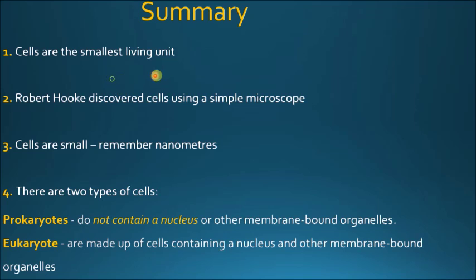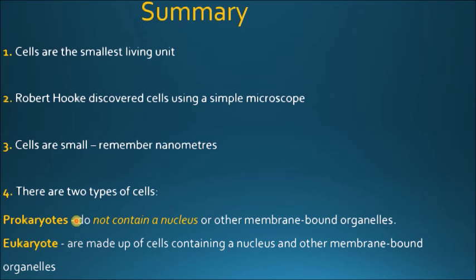Summary for today: cells are the smallest living units. Robert Hooke discovered cells using a simple microscope. Cells are small — remember, we're talking micrometer scales, not nanometers. There are also two types of cells: prokaryotes, the ones that do not contain a nucleus, and eukaryote cells, the ones that contain a nucleus and membrane-bound organelles. I'll be making a video soon with a better description of those types of cells, but I hope this video will be enough to keep us working next week. See ya!